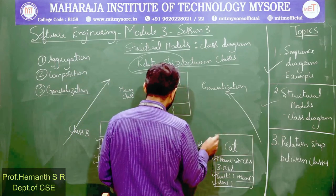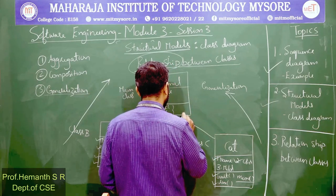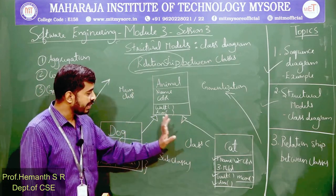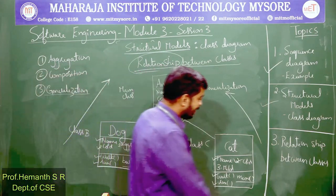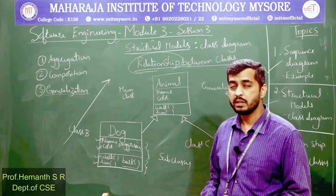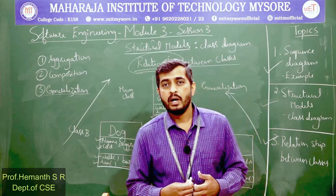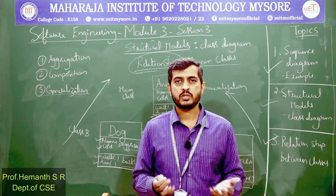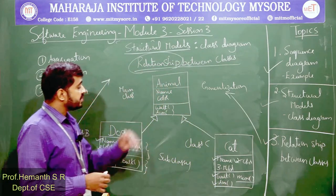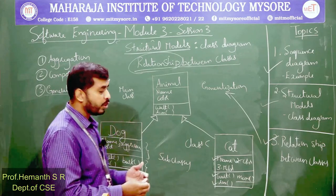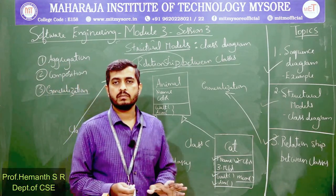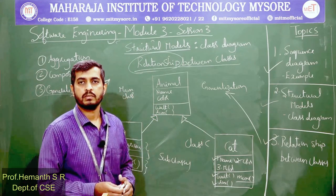Between Dog and Animal, and between Cat and Animal, we use a hollow triangle arrowhead — not a solid triangle. This represents the generalization relationship. Classes cannot have independent existence; they interact and communicate. We presented the different types of relationships: aggregation, composition, and generalization. In the next session — session 4 — we will present the structural model of a banking software, illustrating all relationships in one single model.